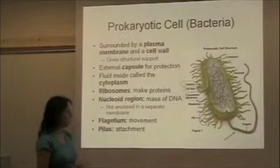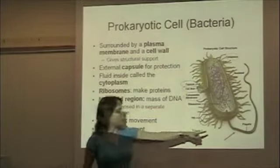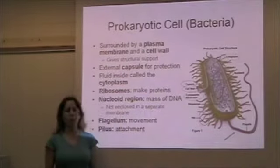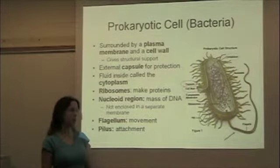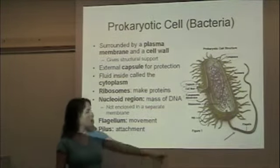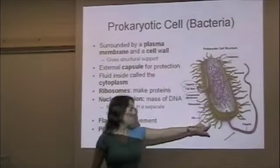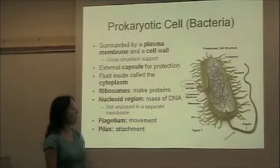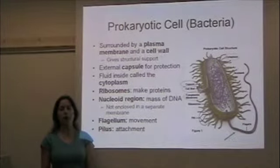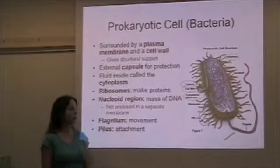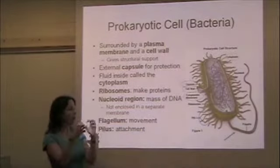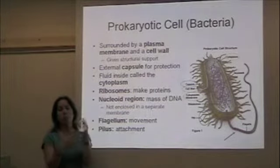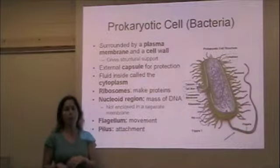For movement, we have a flagella, which the bacteria can wave back and forth to propel it through the environment. And then we also have multiple pili — the singular is pilus. The purpose of the pili is for attachment, so pili allow two bacteria to attach to one another or maybe to another surface in their environment.